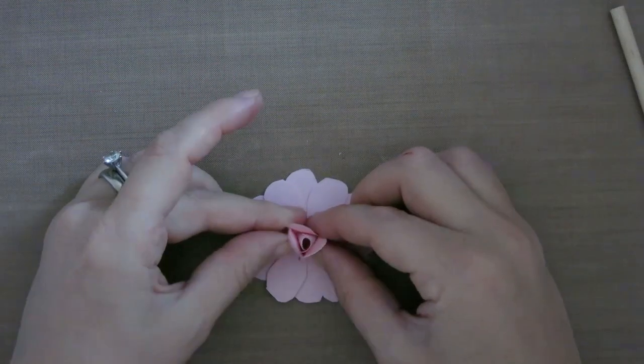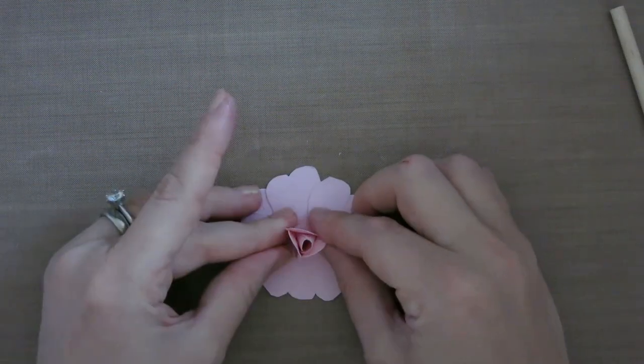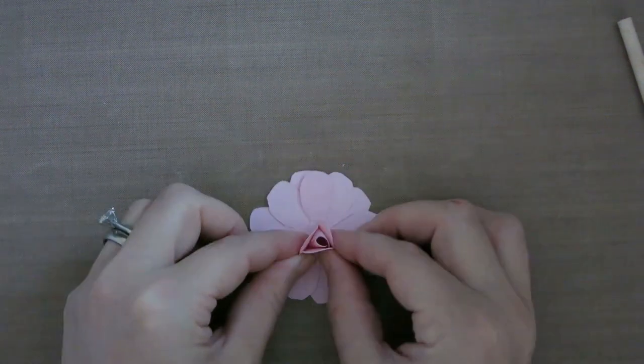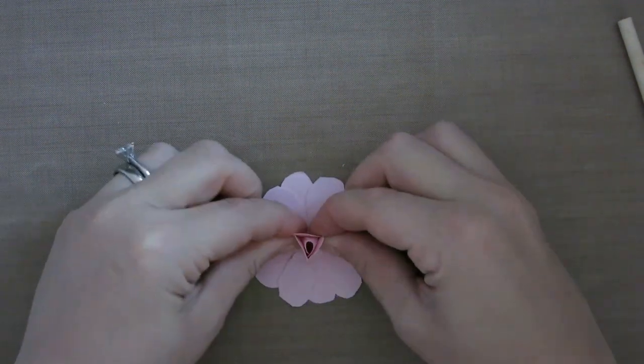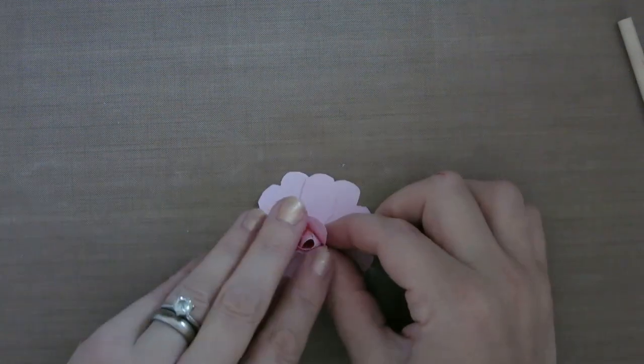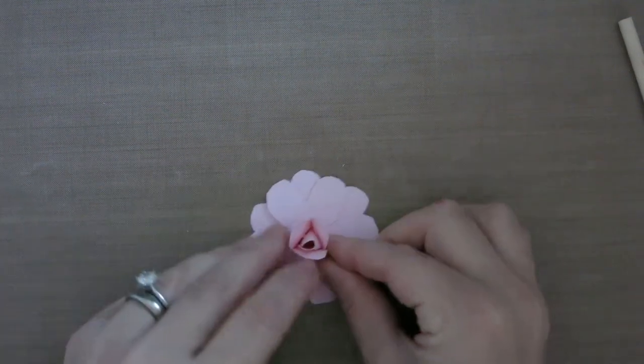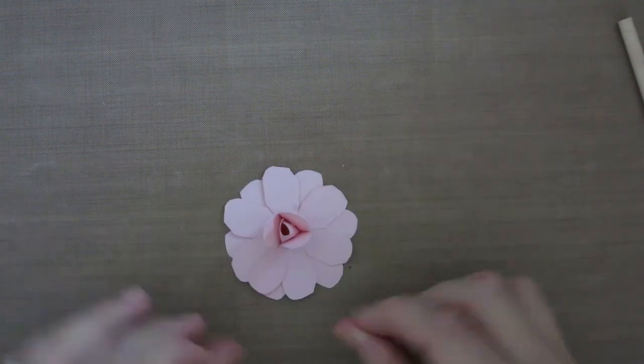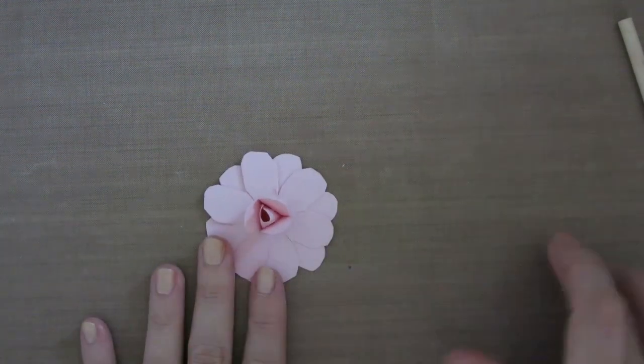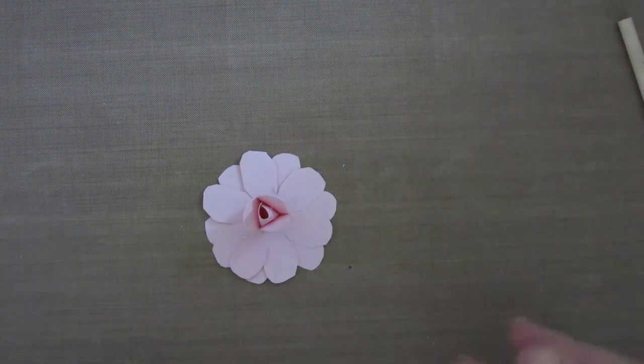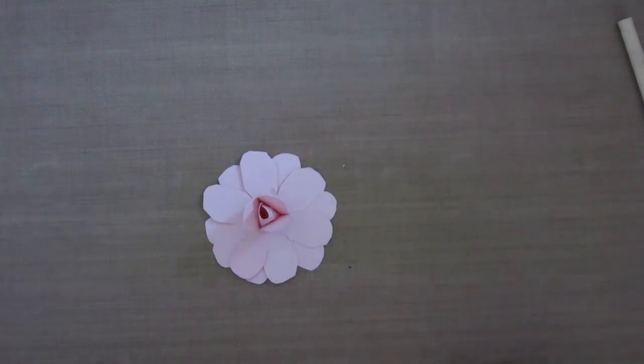Now at this stage you can probably see it's starting to look like a rose. Once again keep pressing and sculpting it until you're happy with the shape and until it stays where you want it to stay. So again if you're doing assembly line style, do a whole bunch of them to this point and by the time you get back to the first one it should be dry enough to go to the next step.